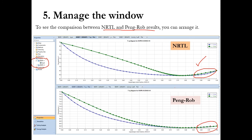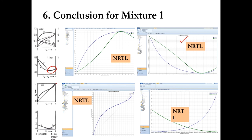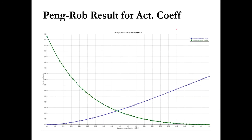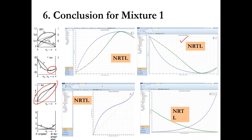You can see that in Peng-Robinson the peak is very small and nearly constant, whereas in NRTL the peak is more prominent — this is what the literature specifies. Similarly, in the XY diagram, the curve crosses the equilibrium line in NRTL, which matches the literature, but this crossing behavior is not visible in Peng-Robinson. Looking at the activity coefficient diagram as well, NRTL is the best suited.